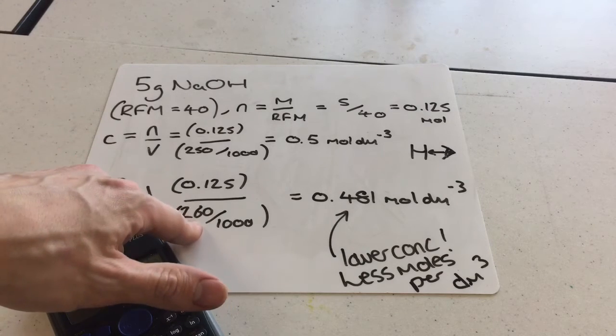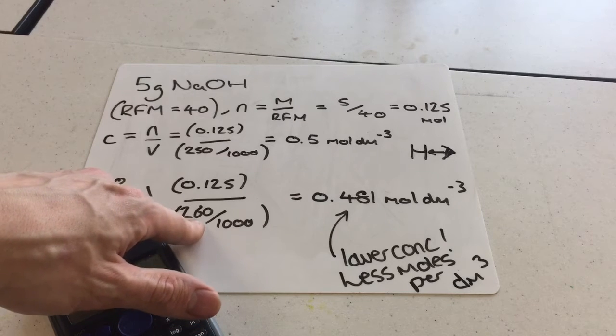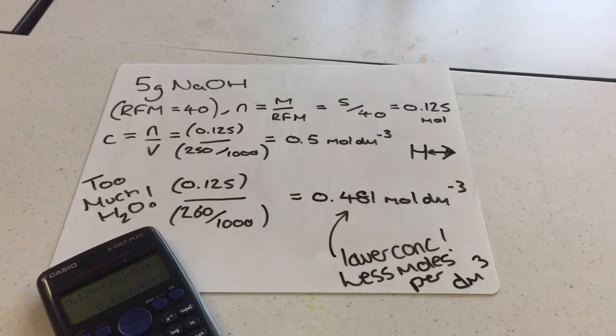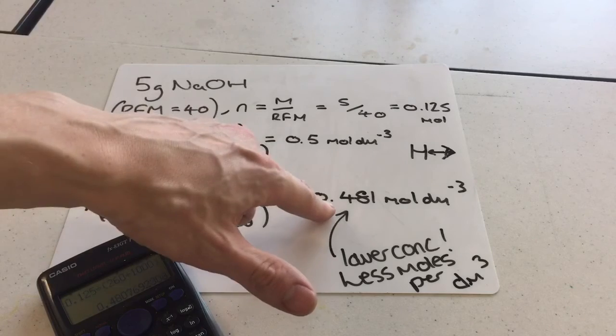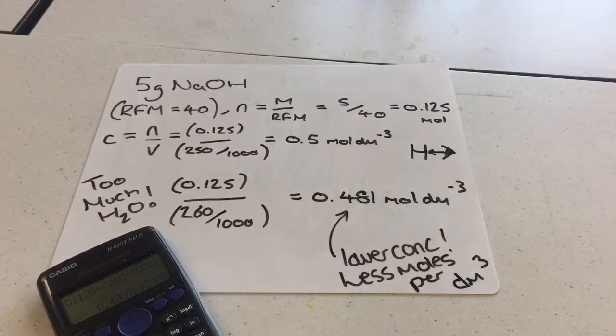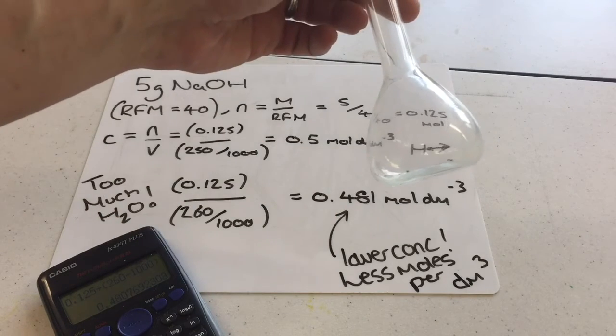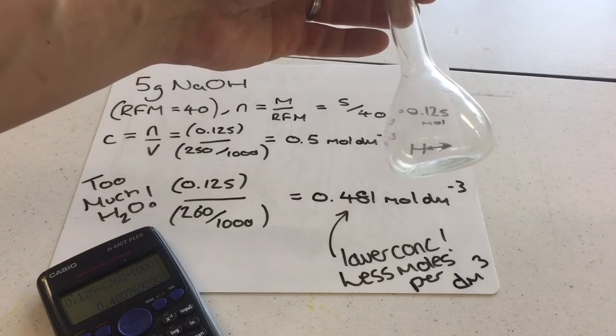Now, if you add too much deionised water - let's say the total volume ends up being 260cm³ - when you do the concentration calculation and look at them both together, you can see that the actual solution is now slightly less concentrated overall.